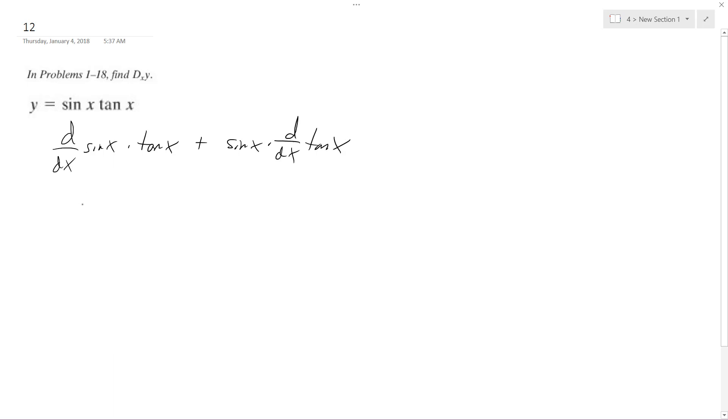So we end up here with cosine of x times, I'm going to break the tangent down to its simplest components, sine x over cosine x plus sine of x. The derivative of tangent of x is secant squared x.